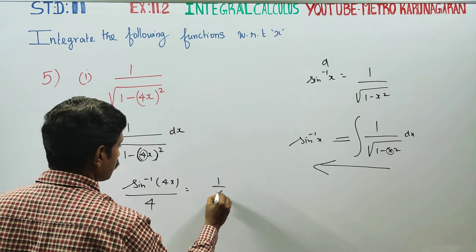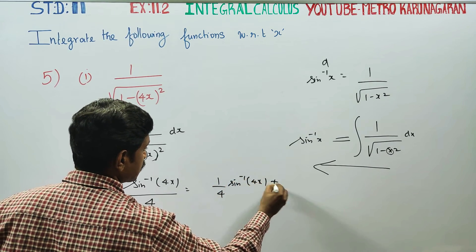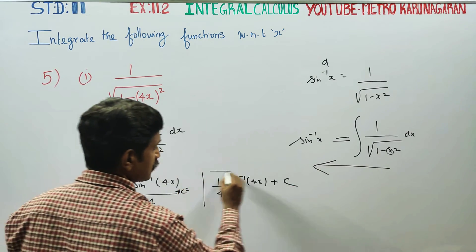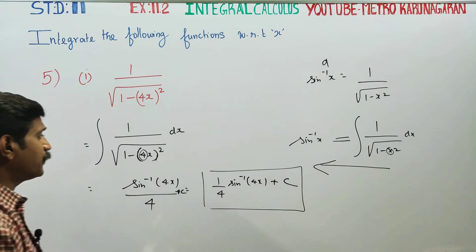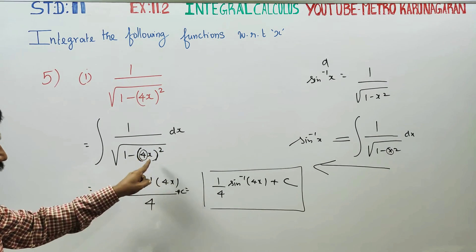Your answer will be 1 by 4 sin inverse of 4x plus c constant of integration. This is your final answer. This is the whole square of all square brackets. It looks like linear.